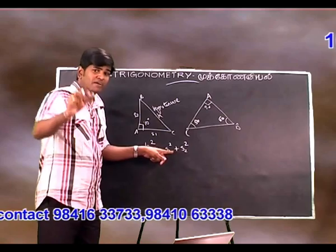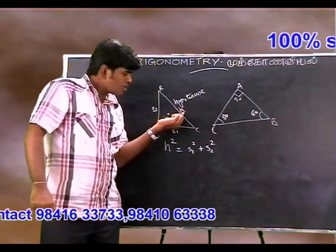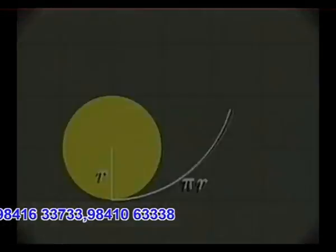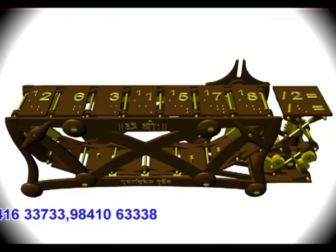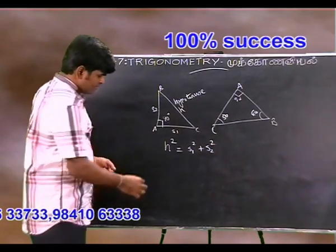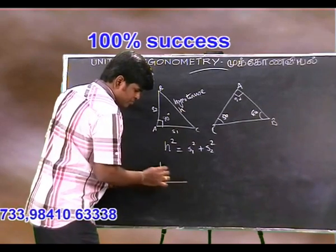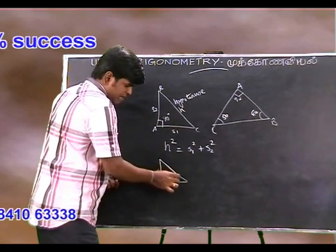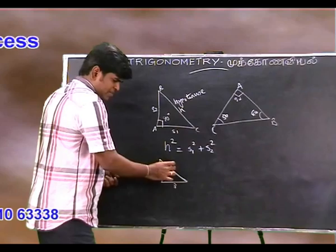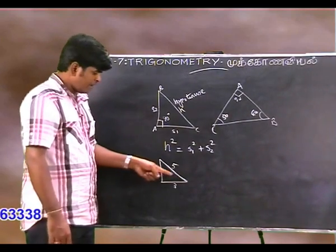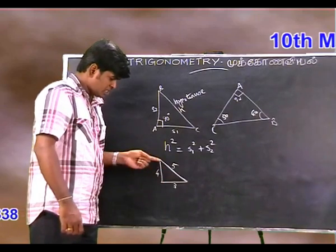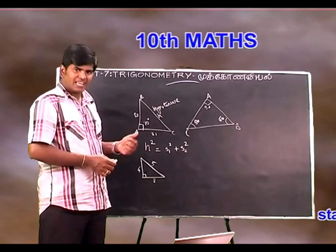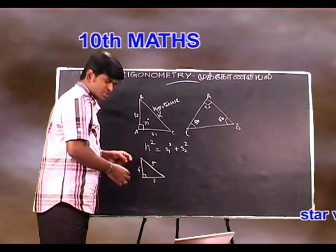If you add the values and make squares, they will be equal. For example, if you make a square of 2 centimeters, you can add a square of 3 centimeters and a square of 4 centimeters. If you have a 5, you will have a 5 square.